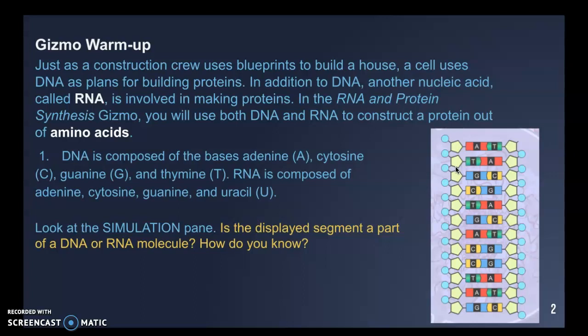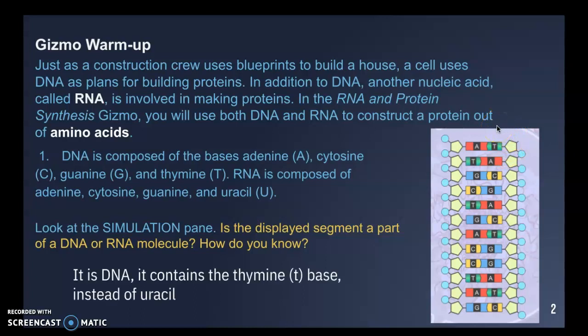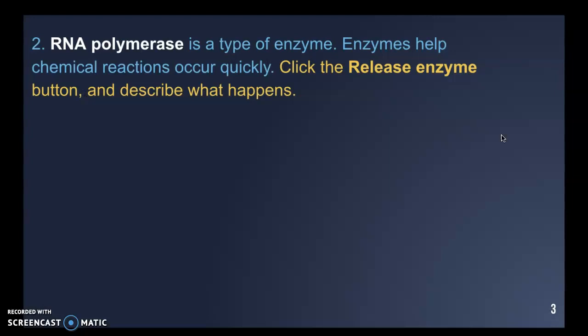DNA is composed of bases A, C, G, and T, while RNA is composed of the same bases A, C, and G but has uracil instead of thymine. Looking at the simulation panel, you have to look at the bases found in these segments — because the base T is present, that tells us it's part of DNA. If that base were U, it would be a strand of mRNA.